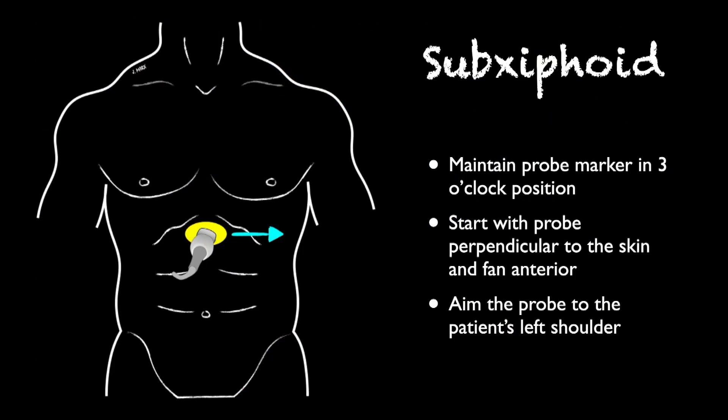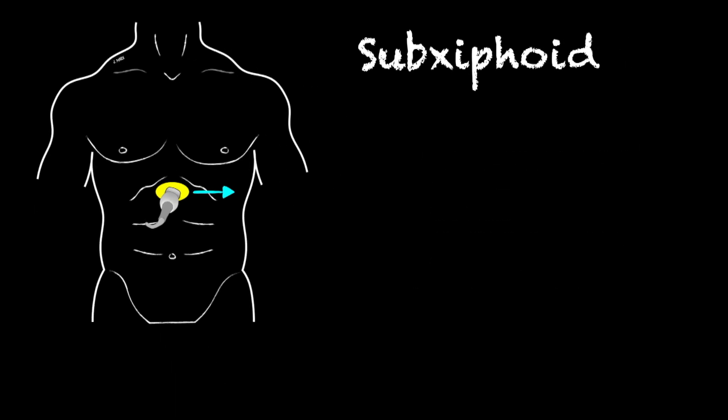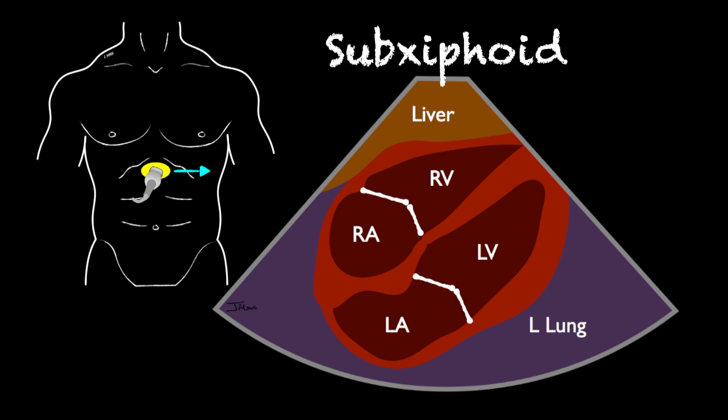To get this view, you want to get your standard subxiphoid view. You put the probe in the subxiphoid position and you're going to fan and angle up towards the patient's left shoulder until you get a view similar to this. What you're going to see at the top of your screen is your liver, and the right ventricle is going to be right up next to the liver. Just inferior to that on your screen is going to be the left ventricle.